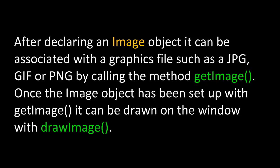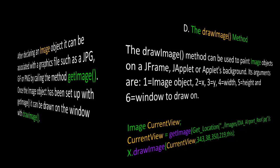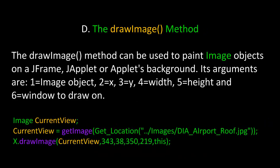After declaring an image object, it can be associated with a graphics file such as a JPEG, GIF, or PNG by calling the method getImage. Once the image object has been set up with getImage, it can be drawn on the window with drawImage. The drawImage method can be used to paint image objects on a JFrame, JApplet, or Applet's background. Its arguments are: one, the image object to be drawn; two, the x-coordinate; three, the y-coordinate; four, the width; five, the height; and six, the window to draw in — usually the 'this' pointer referring to the current JFrame or JApplet.